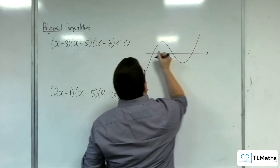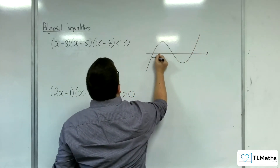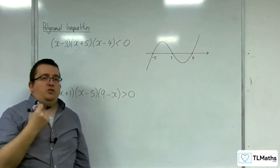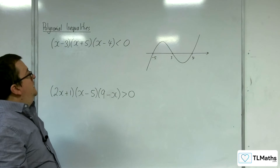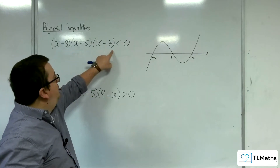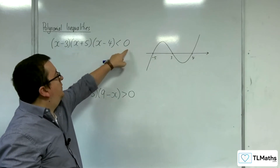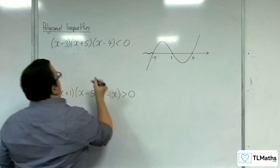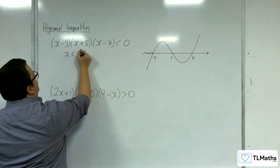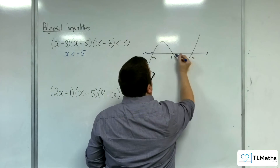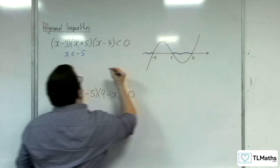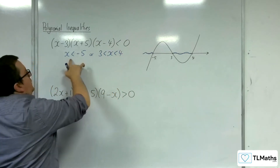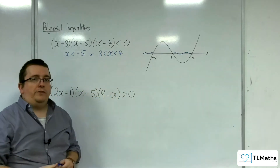So we're going to have minus 5, 3 and 4 on the sketch. Remember the sketch does not have to be to scale — it's just there to identify the regions. We're being asked where the graph is below the x-axis. It is below it when x is less than minus 5, and below it between 3 and 4, so when x is greater than 3 but less than 4. These are the two regions to identify.